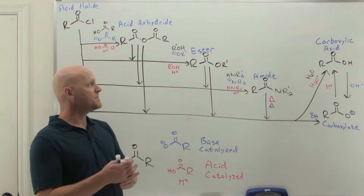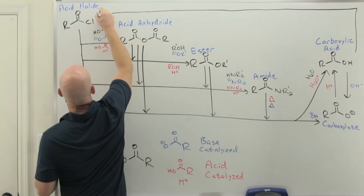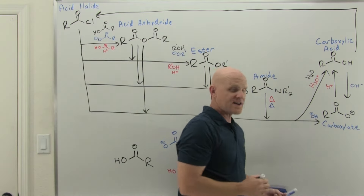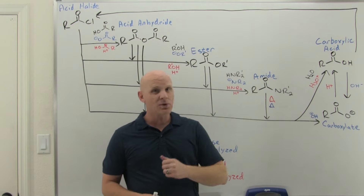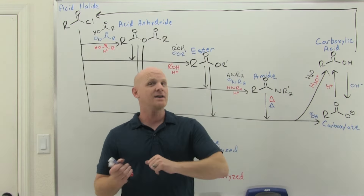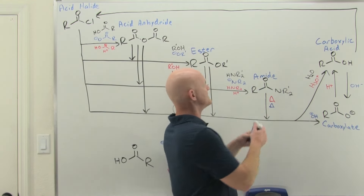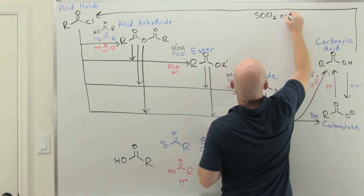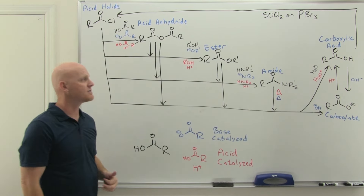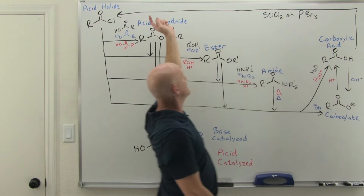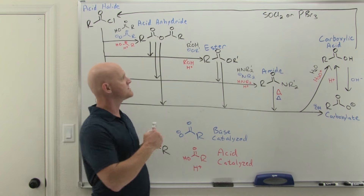We've seen a couple of uphill reactions: protonating carboxylate with acid to get carboxylic acid, and amide to carboxylic acid with H₃O⁺ and heat. There's one other major uphill reaction: you can take a carboxylic acid and convert it into an acid halide using the same reagents we used to convert an alcohol's OH into an alkyl chloride or bromide — SOCl₂ gives the acid chloride and PBr₃ gives the acid bromide. Also, esters and carboxylic acids are roughly equal in reactivity and can be interconverted.